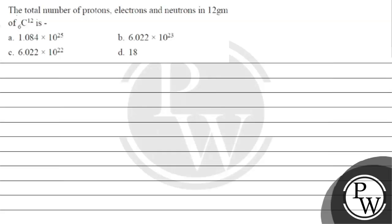Hello! Let's read this question. The question says: the total number of protons, electrons and neutrons in 12 gram of ¹²C₆ is? The key concept for this question is: